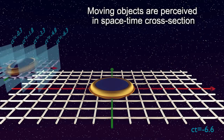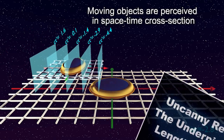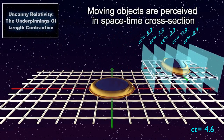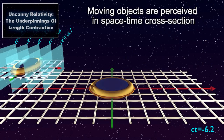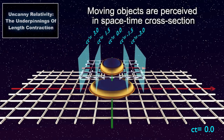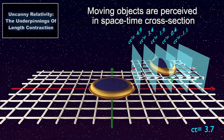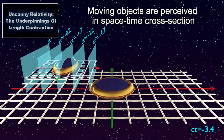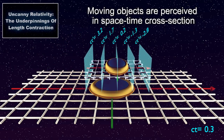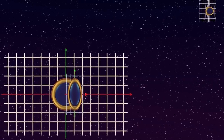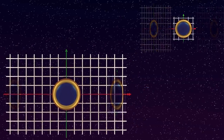Our previous discussion on the underpinnings of length contraction introduced this fundamental feature of relativistic motion by means of a pair of color-coded clocks. The cross-section is determined by the moving frame's relative speed, and so different frames seek different space-time cross-sections. The length contraction paradox arises because the two labs observe each other according to different space-time cross-sections in different inertial frames.